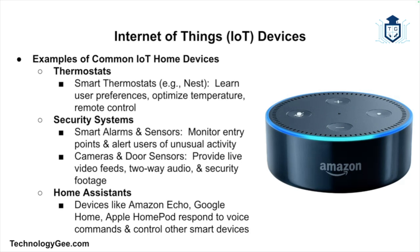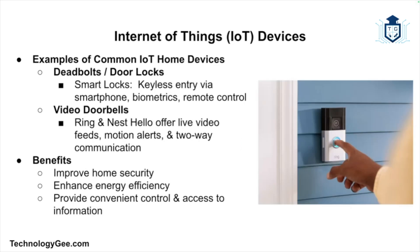IoT security systems include smart alarms and sensors that monitor doors, windows, and motion, sending alerts to homeowners' smartphones. Cameras and door sensors provide live video feeds, two-way audio, and recorded footage. Home assistant devices like Amazon Echo, Google Home, and Apple HomePod respond to voice commands, control other smart devices, and serve as hubs for home automation. Smart locks allow keyless entry via smartphone, codes, or biometrics and can be remotely locked or unlocked. Video doorbells like Ring and Nest Hello provide live feeds, motion alerts, and two-way communication with visitors.